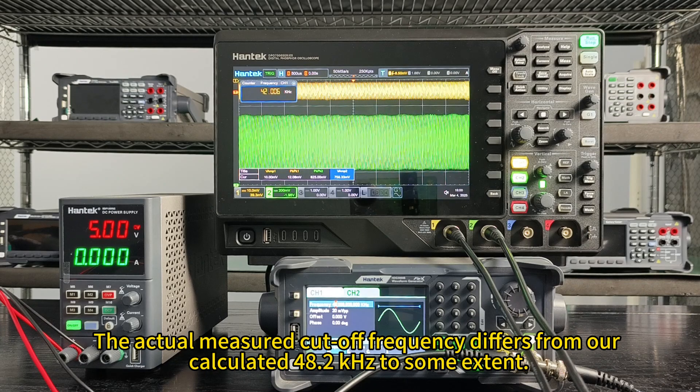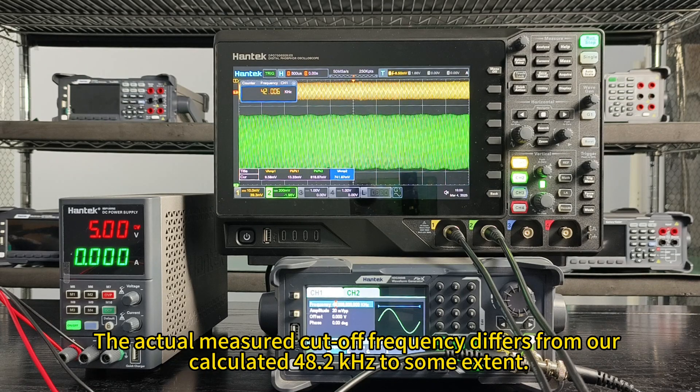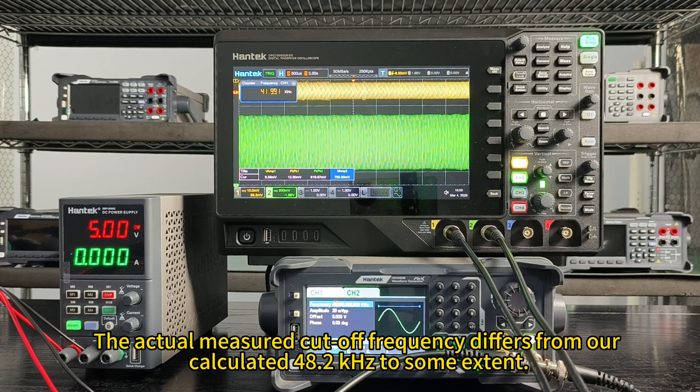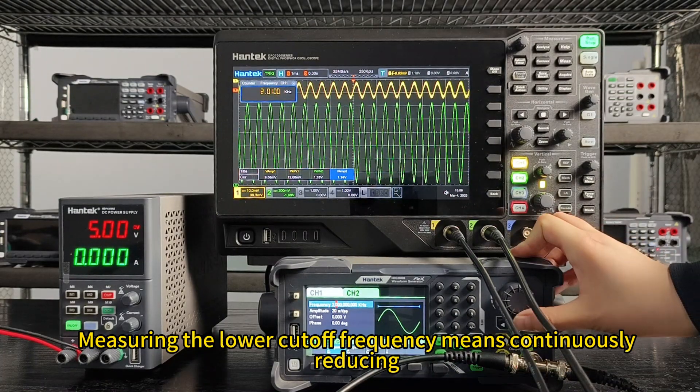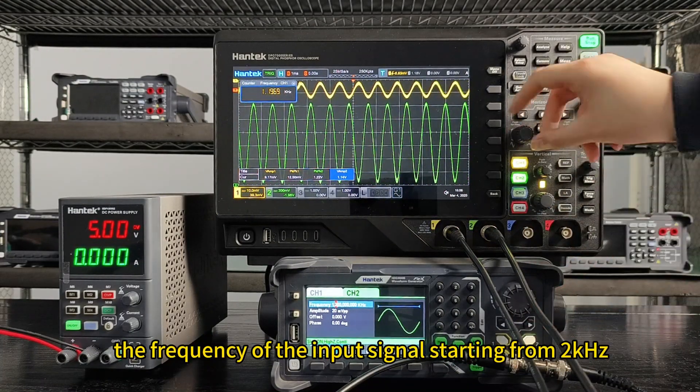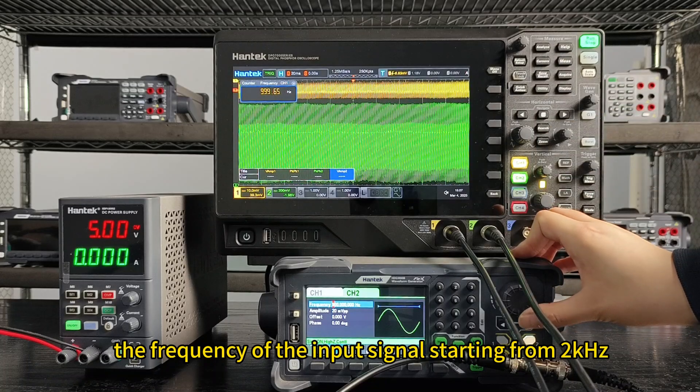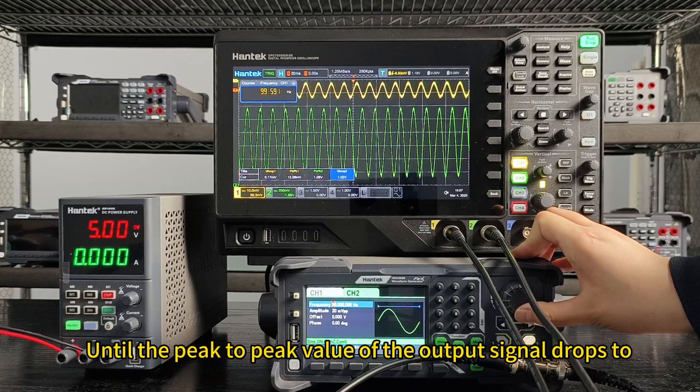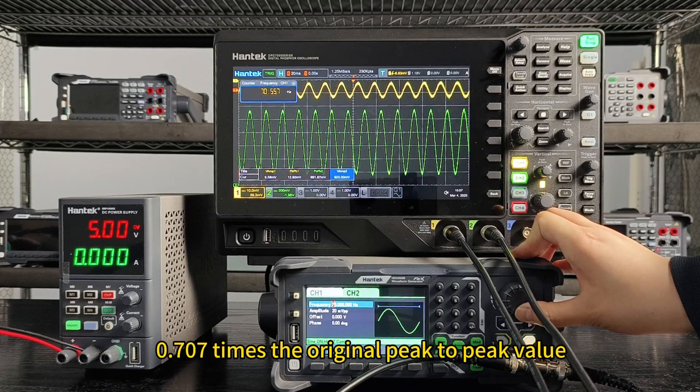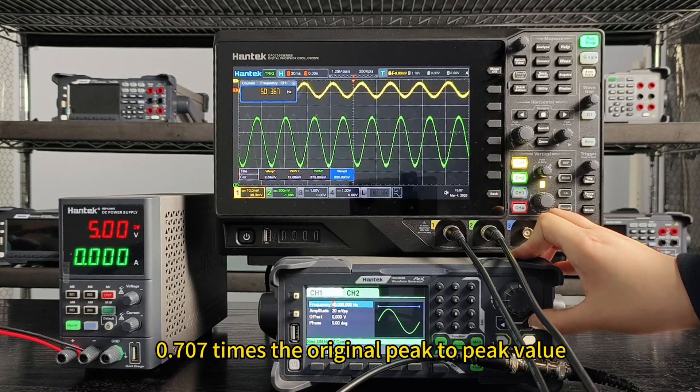The actual measured cut-off frequency differs from our calculated 48.2 kilohertz to some extent. Measuring the lower cut-off frequency means continuously reducing the frequency of the input signal starting from 2000 hertz until the peak-to-peak value of the output signal drops to 0.707 times the original peak-to-peak value.